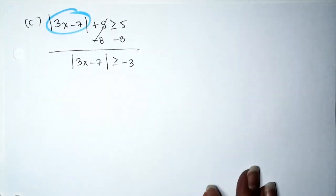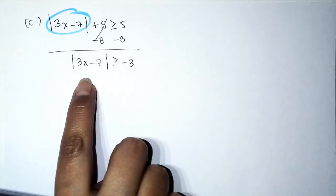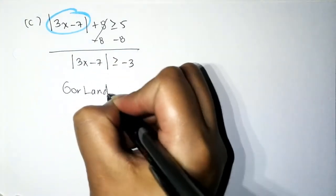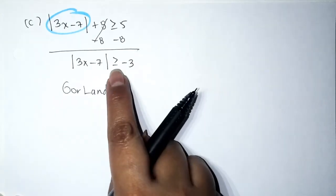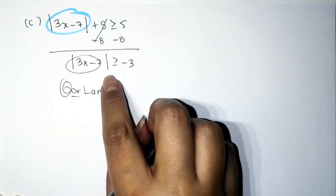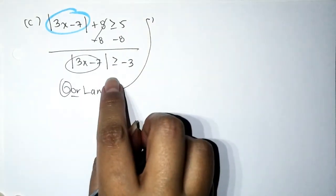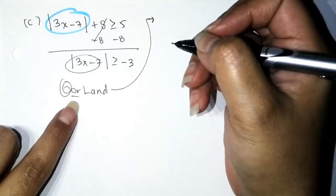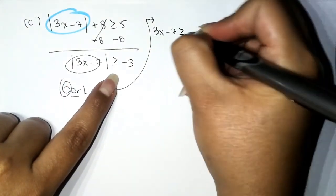For those who read ahead, you might recognize a shortcut here. But we'll solve it algebraically first. The absolute value is isolated. We have a greater-than-or-equal-to symbol, so it's an OR kind of problem. We set it up as: (3x − 7) ≥ −3 OR −(3x − 7) ≥ −3.